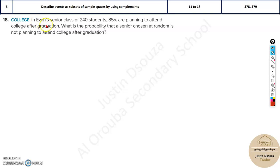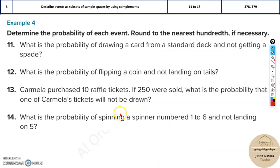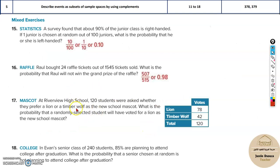I hope this is clear. This is the last problem. In Evans's senior class of 240 students, 85% are planning to attend college after graduation. What is the probability that a senior chosen at random is not planning to attend college? Again, very easy. 240 students, 85% are planning. What's the probability they won't be attending? It's 15%. So it's 0.15. Some of these you don't need to solve - you can directly look into the problem and understand the answer. Make sure you go through these, solve them by yourself, and check the answers.